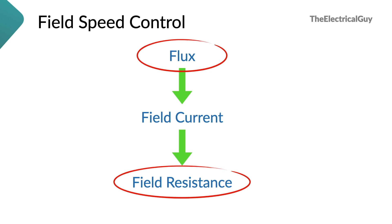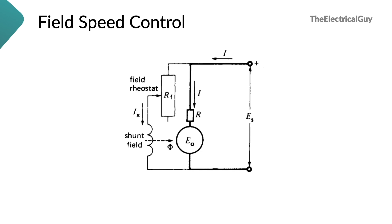To control the flux, we need to control the field resistance. The systematic diagram for field speed control shows a variable rheostat connected in series with the shunt field. We cannot control the resistance of the shunt field itself, so we add a rheostat in series with it — the same approach used in the armature resistance control method. The only difference is that in armature control we connected the series rheostat in series with the armature, whereas here it is connected in series with the shunt field. By controlling the resistance of this variable rheostat, the flux changes, and that causes a change in the speed of the DC motor.